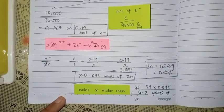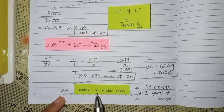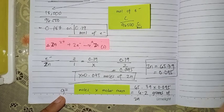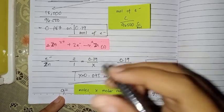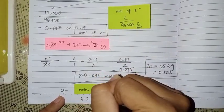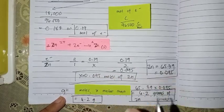To find grams, we only need to multiply the moles of zinc by its molar mass, and we get the final answer. The final answer is 6.2 grams.